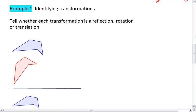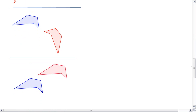Example 1, identifying transformations. So I want you to tell me whether each transformation is a reflection, a rotation, or a translation. Take a moment. Here's the first one. Here's the second one. And here's the third.